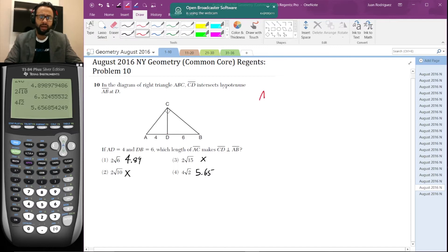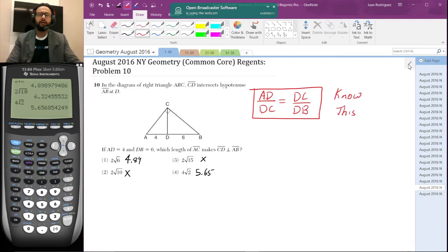then it is true that AD over DC is equal to DC over DB. Okay. This is a very worthwhile theorem to know. It's a special theorem, very useful. They bring it up on almost every Regents, so definitely have it.